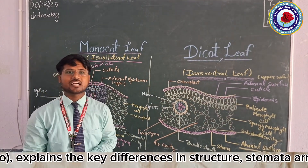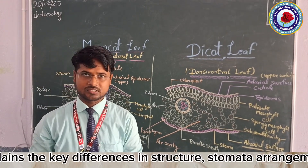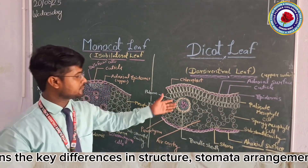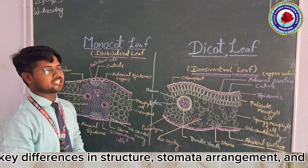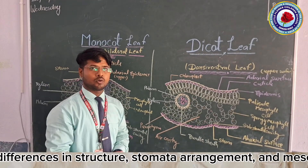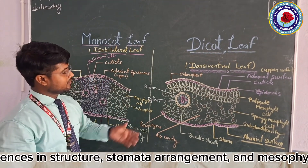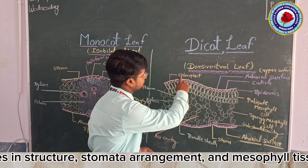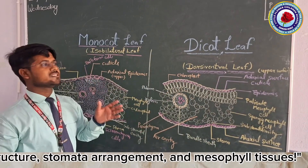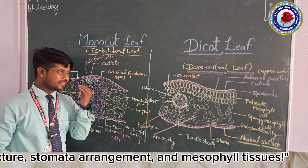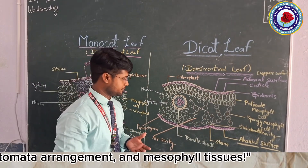As you know, xylem helps in water transport throughout the plant, while phloem is helpful in food transport throughout the entire plant body. These dot structures represent chloroplasts, and within the chloroplast there is a green pigment known as chlorophyll.